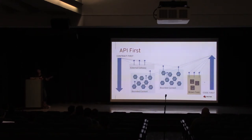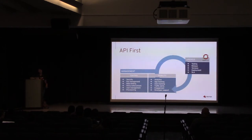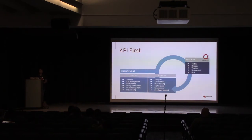I see more code-first with bounded contexts because that's how people used to like to work. But with external users you see more contract-first development. Once you have the APIs you need to secure them. I don't want to go into deep API management details — it's a big topic. But just remember, when you have your contracts, make sure you have a way to manage all these contracts — a place where people can see what the contracts are.